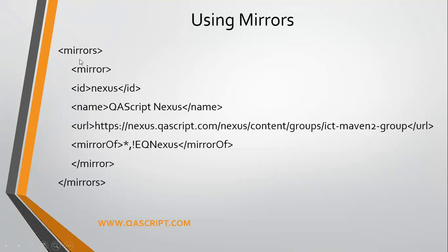Now how can we use them? We basically have to go and change our settings.xml file from the Maven setup. These are the mirror settings which we need to change. We need to give an id for the particular mirror and the name - it will find that particular repository by the id. We also need to give the URL, which is our repository URL.